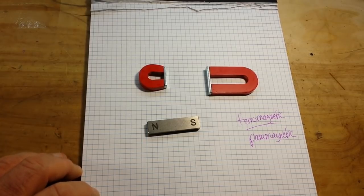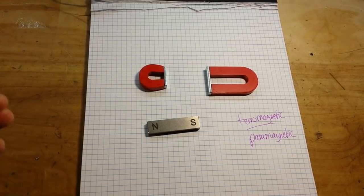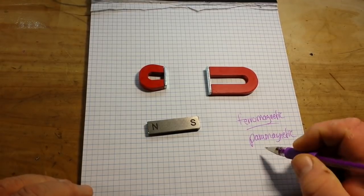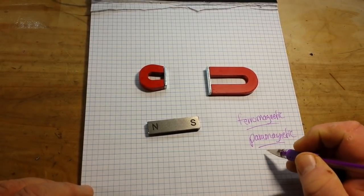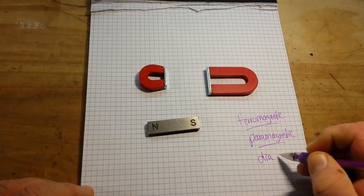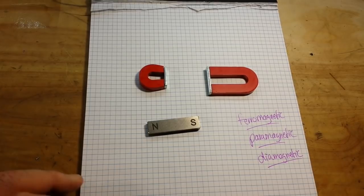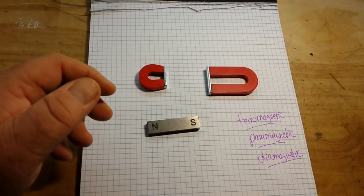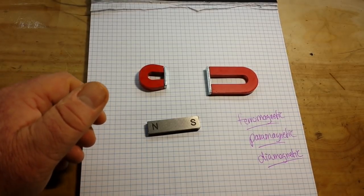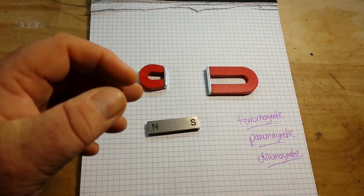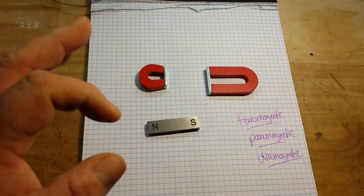And then finally, and this is for Mike, we have diamagnetic. Diamagnetic is the strangest of all of these. Diamagnetic materials in the presence of an external magnetic field become slightly magnetized.